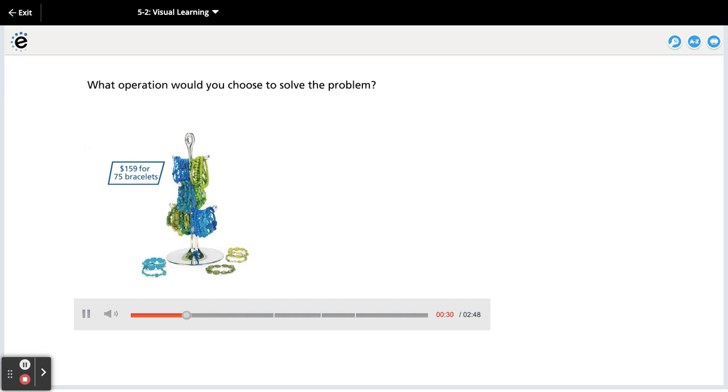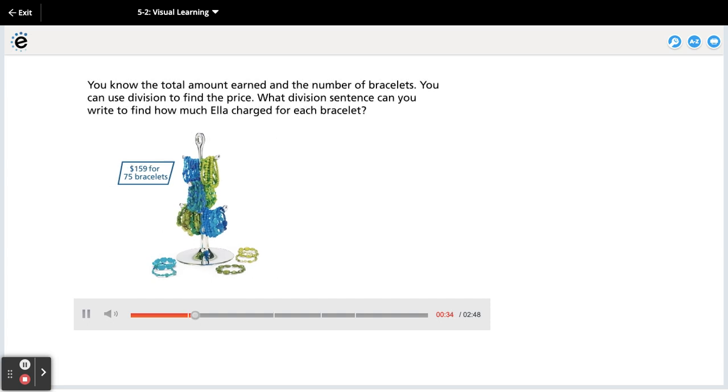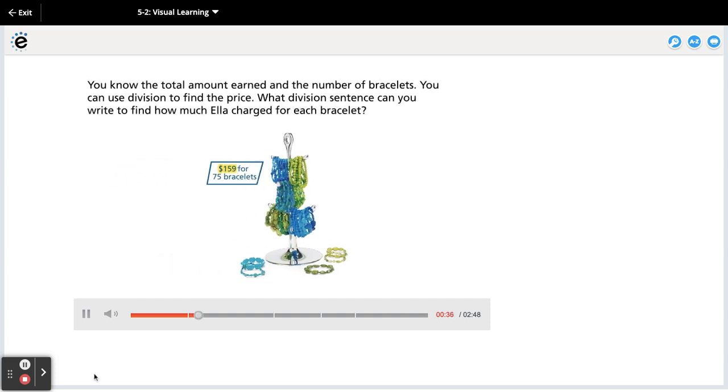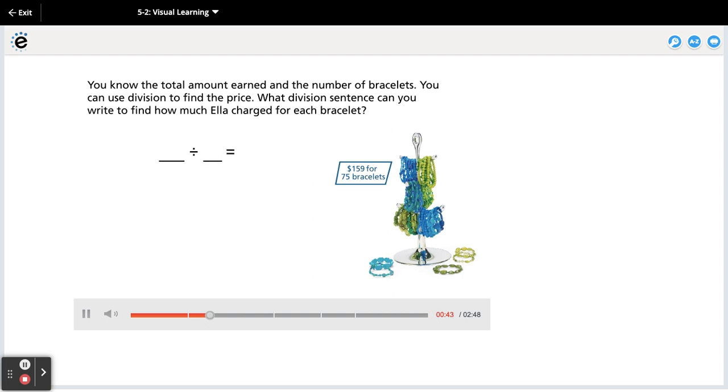What operation would you choose to solve the problem? You know the total amount earned and the number of bracelets. You can use division to find the price. What division sentence can you write to find how much Ella charged for each bracelet?